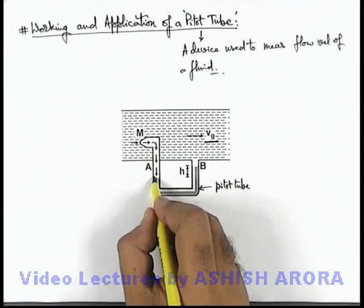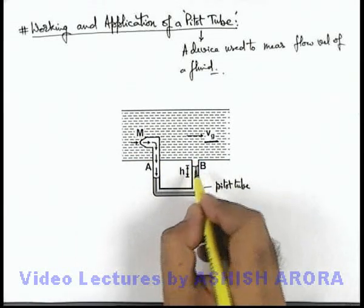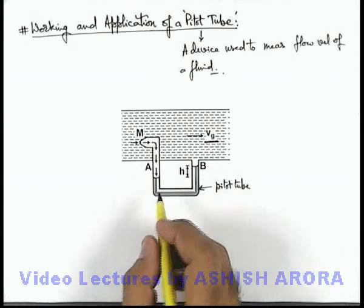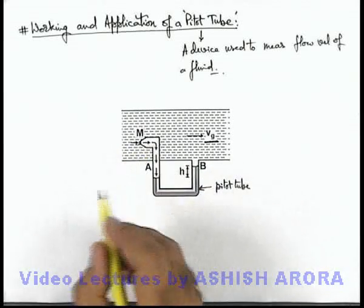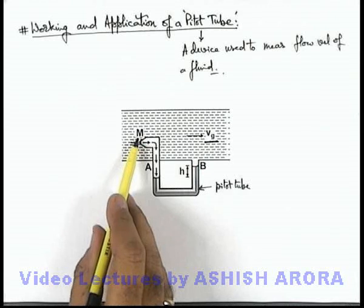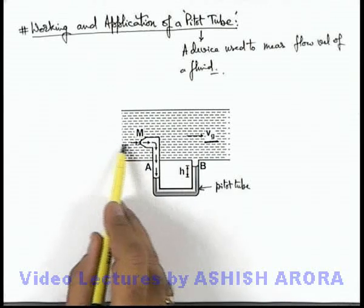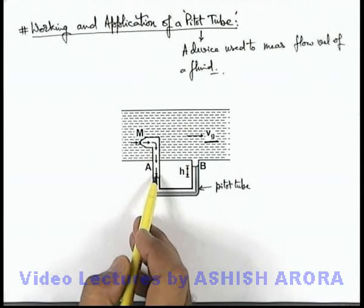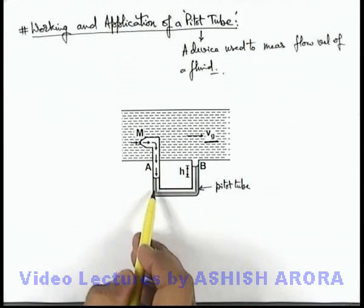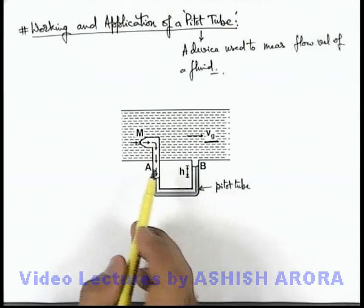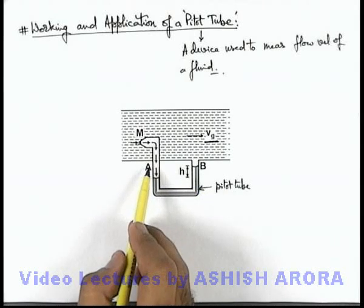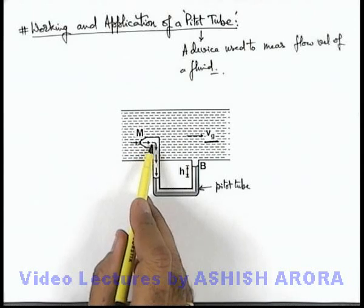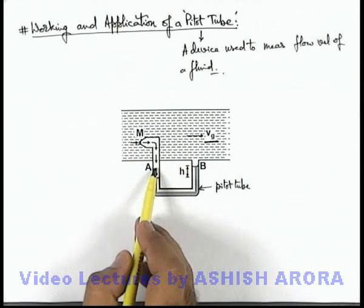In this Pitot tube there is an immiscible liquid which is filled here. And there is a small opening at point M through which the fluid particles will get in and exert a pressure at point A on the liquid filled in the U tube which is the Pitot tube.